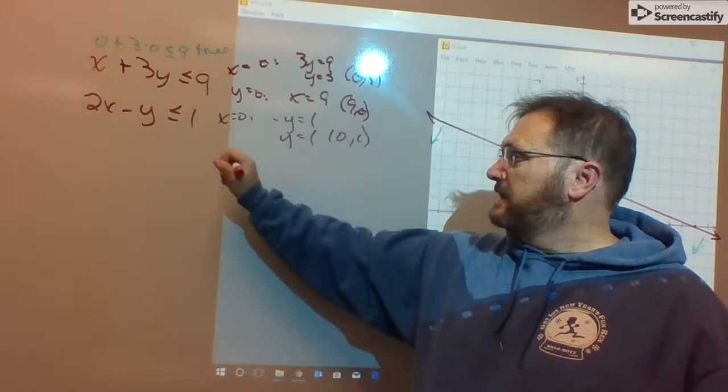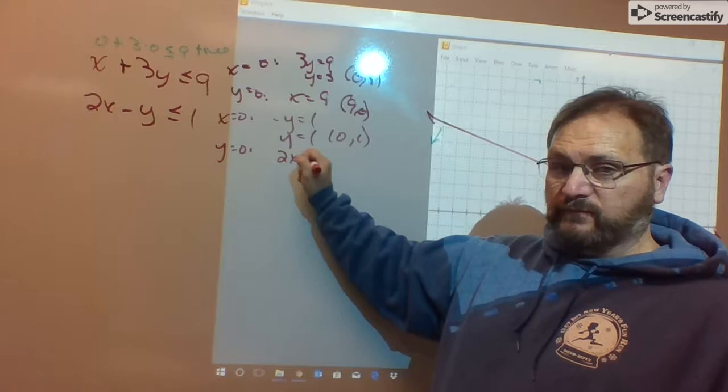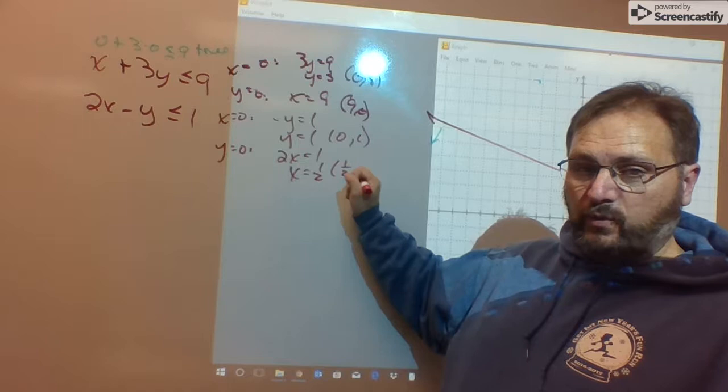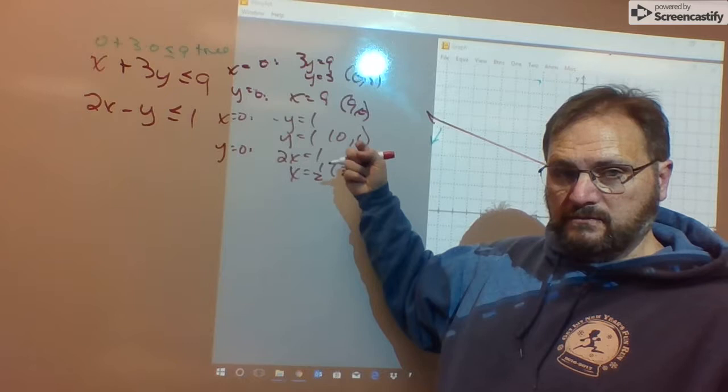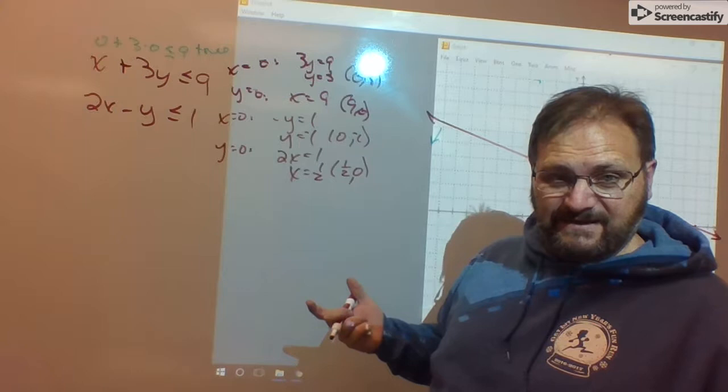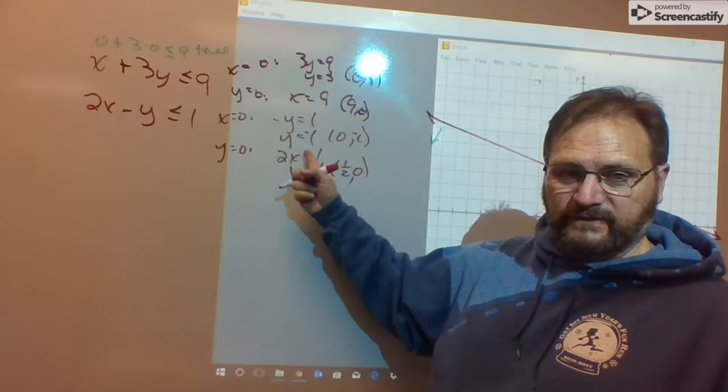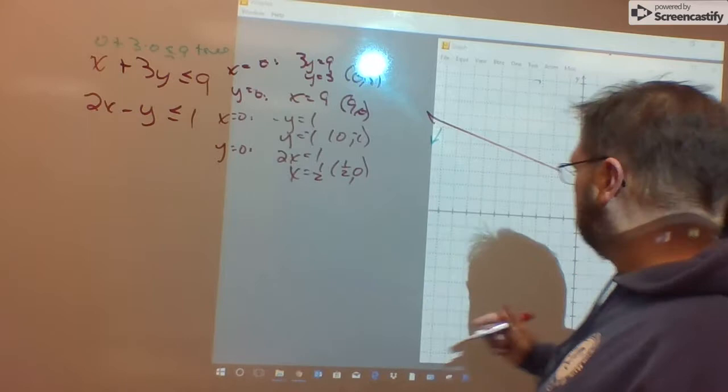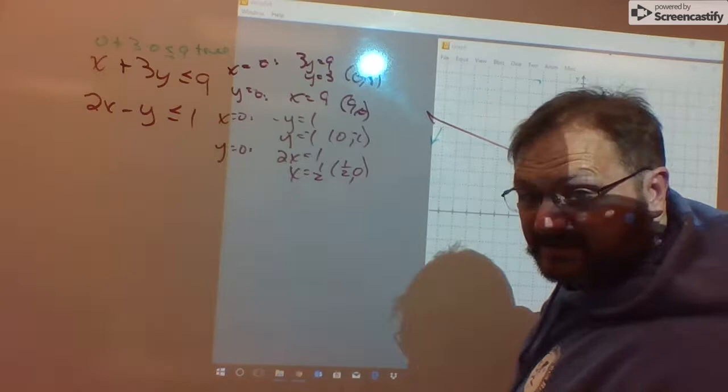If I let y equals 0, I'm left with 2x equals 1. x equals 1 half. Plot the point 1 half 0 and 0, oops, 0 negative 1. Did you catch my mistake? I'm glad I did. Up here, opposite of y equals 1 means y equals negative 1. Plot the point 0, negative 1 and 1 half 0. It's a solid line because of the or equal to.